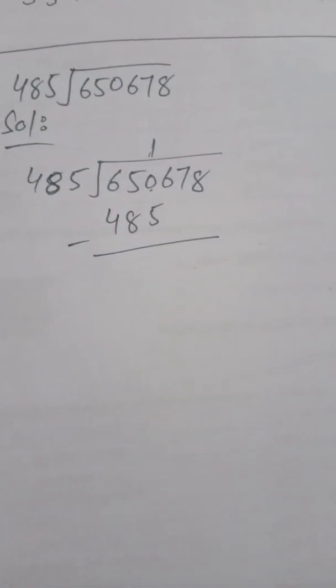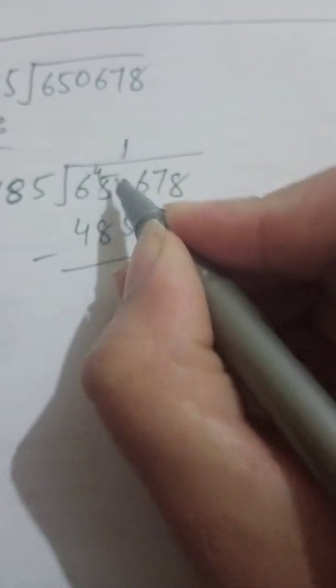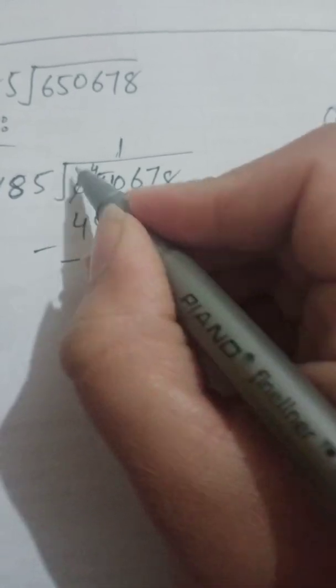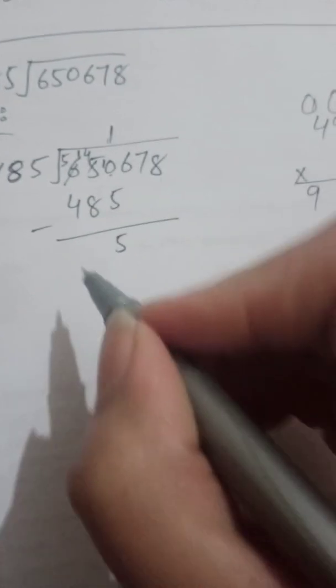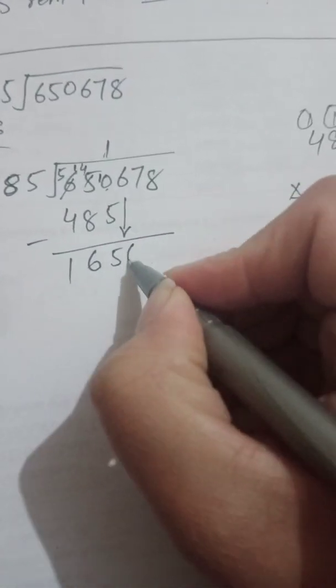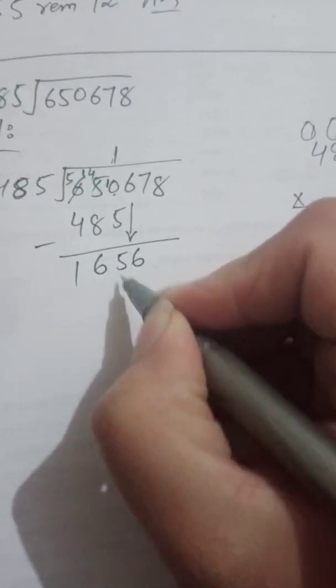Now subtract: 5 cannot be subtracted from 0, so we borrow from the next column. 10 minus 5 is 5. In the tens column, 4 cannot be subtracted from the borrowed value, so we borrow from 6, making it 5 and 14. 14 minus 8 is 6, and 5 minus 4 is 1. The difference is 165. Next step: bring down the next digit, which is 6. Now we have 1,656.